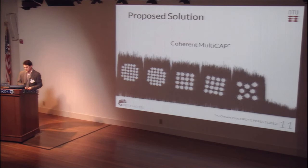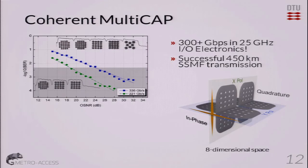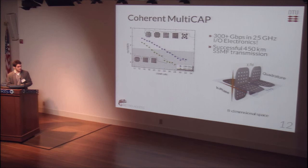Multicap was presented by Miguel Iglesias Olmedo in a post-deadline paper at OFC 2013. Another question was: can we squeeze this idea a little bit more? Can we get something else out of it? We decided to make it coherent. This coherent Multicap allowed us to seize upon the great dimensionality and transmit more than 300 gigabits per second — namely 336 gigabits per second — on one single carrier using 25 gigahertz electronics, and successfully transmit over more than 400 kilometers of single-mode fiber. These experimental results are what I will be presenting at OFC 2014.